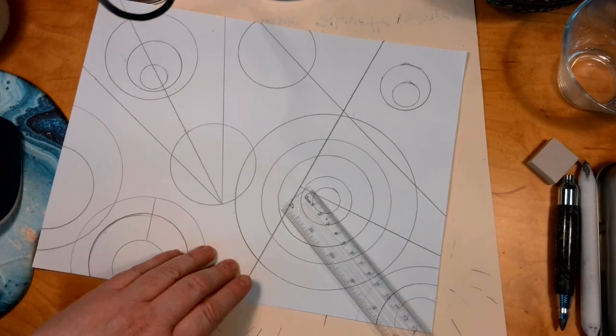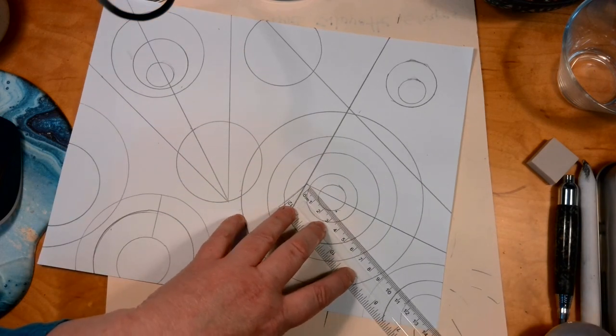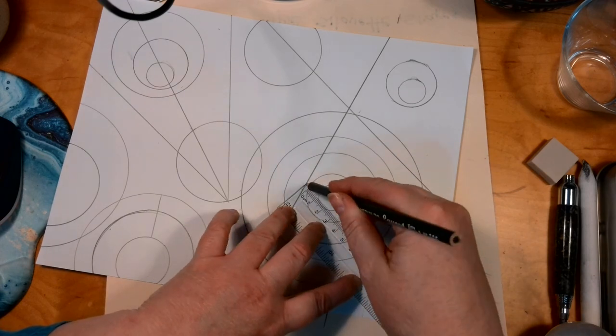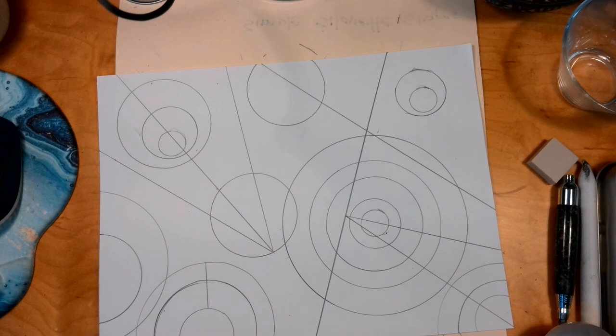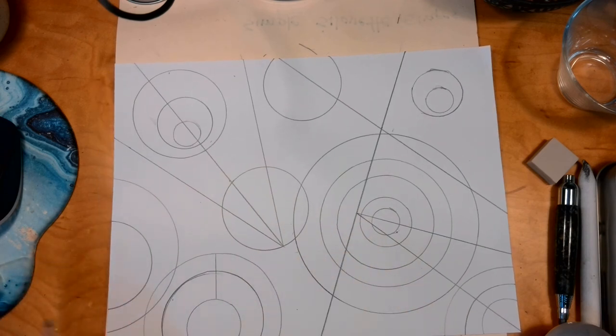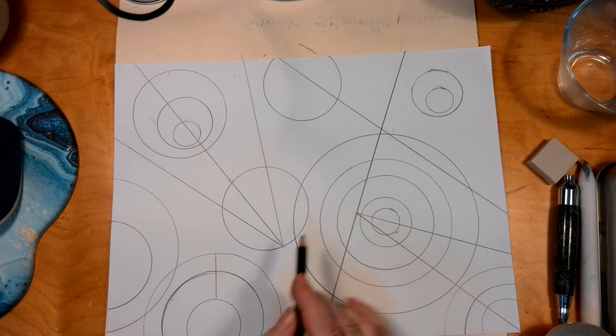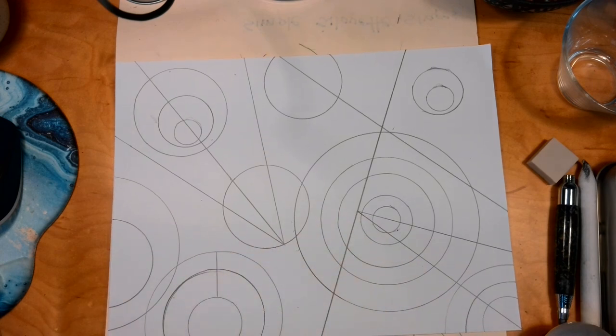And I might even do this. So we don't want lines that are crisscrossing everywhere. We want to think about where our lines are anchoring, using the edges of our circles to guide where things begin and end.